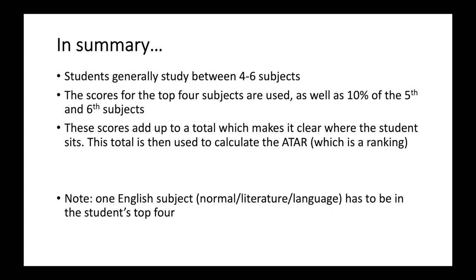In summary, students generally study between four to six subjects. The scaled scores for the top four subjects are used in full, as well as 10% of the fifth and sixth subjects if the student chooses to study more than four. These scores add up to a total which clearly shows where the student sits, and this total is then used to calculate the ATAR. Finally, note that one English subject — whether that's standard English, Literature, or English Language — must be in the student's top four, regardless of what the score is.